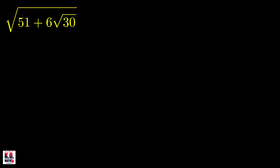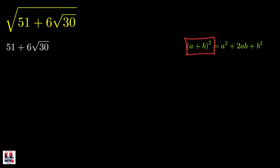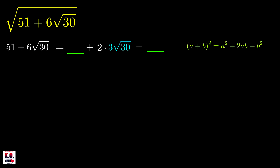Let's look at this first problem. The strategy is to look at the radicand 51 plus 6 times the square root of 30, and we're going to write this as a square of a binomial — but this binomial may contain radicals. We want to write this expression as a perfect square trinomial of the form (a + b)², treating the radical expression as our middle term, which should be in the form 2ab — so 2 times 3 times the square root of 30.